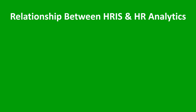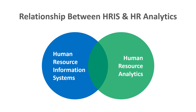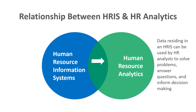Now let's focus on the relationship between HRIS and HR analytics. By definition, both have many commonalities — they're both working with people data or HR data. We can represent them as two circles forming a Venn diagram. On one hand, data from the HRIS can flow to the HR analytics team, so data residing in the HRIS can be used by HR analysts to solve problems, answer questions, and inform decision-making — for example, turnover data and data about selection and recruitment could be pulled from the HRIS and analyzed by the HR analytics team.